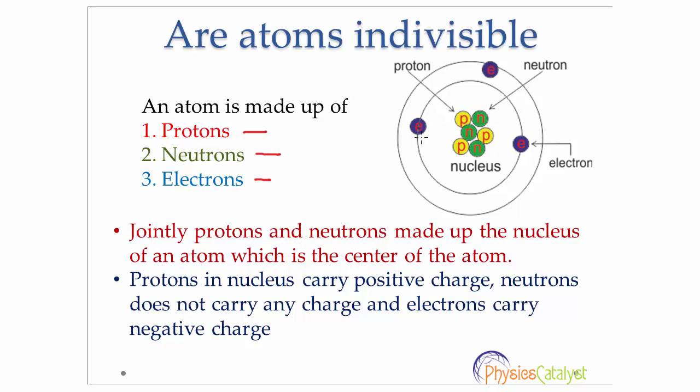Jointly, protons and neutrons make up what we call the nucleus of an atom. The nucleus is the center of an atom which is positively charged. Protons in the nucleus carry positive charge and neutrons do not carry any charge, so neutrons are electrically neutral. Electrons in an atom carry negative charge.